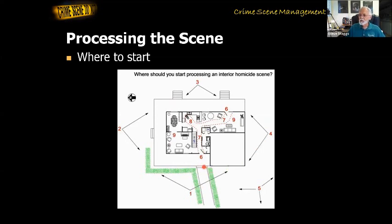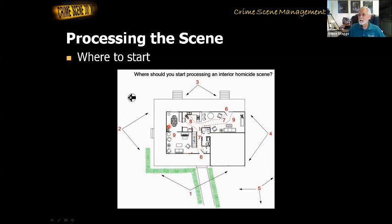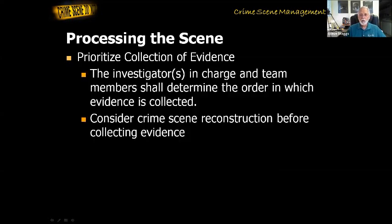Let's say we start here at the front door. Then we can process this area, the hallway leading up to the body. Once we have processed this area and the area of the body, then we can move on to other areas that are less important — the living room, the dining room, the family room — and then perhaps upstairs. At a homicide scene, you're going to want to check out the entire house.